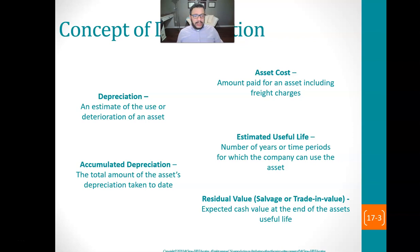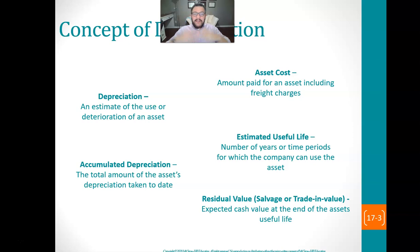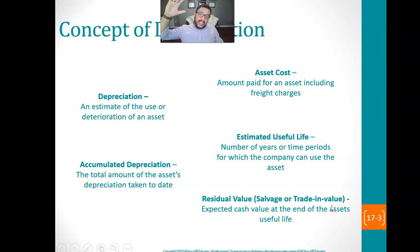The asset cost is what you paid for an item. Estimated useful life is how long an item is generally going to last — companies have determined this, and there are lists that tell us the useful life of certain things. Residual value is the salvage or trade-in value — the expected cash value at the end of an asset's useful life. Once you've depreciated everything you can, the residual value is what that item is worth.